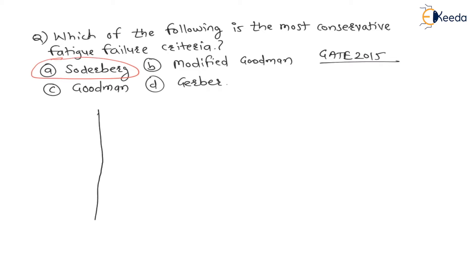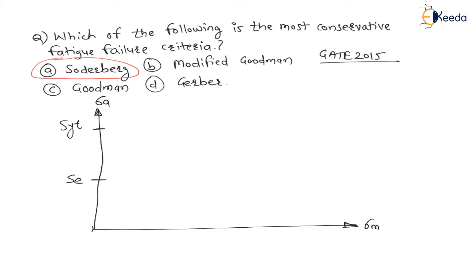Let me draw all the lines. On the y-axis there is stress amplitude, and on the x-axis there is mean stress. On the y-axis we consider endurance strength SE and yield strength SYT. On the x-axis we consider yield strength SYT and ultimate strength SUT. Let us label: SYT on the y-axis as point A, SE on the y-axis as point B, SYT on the x-axis as point C, and SUT on the x-axis as point D.